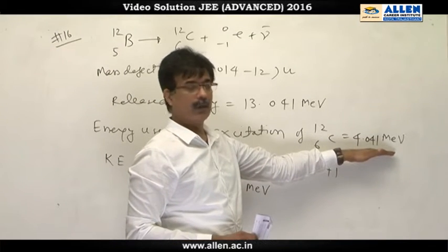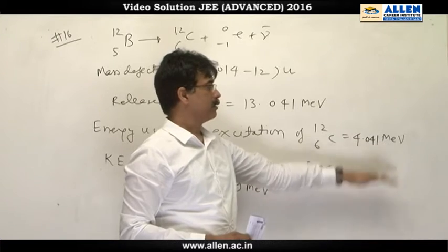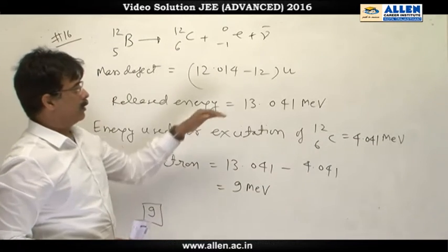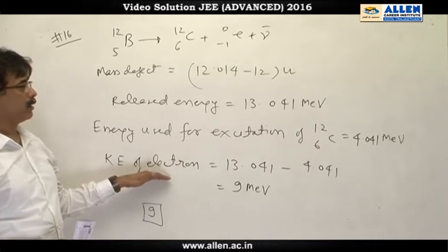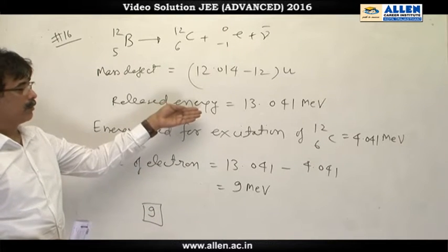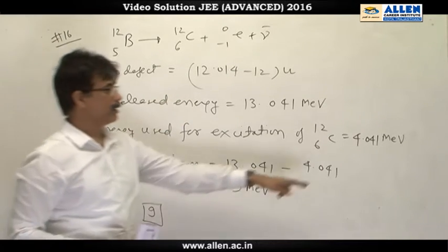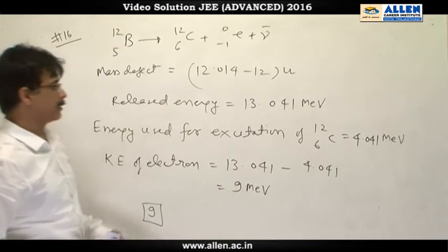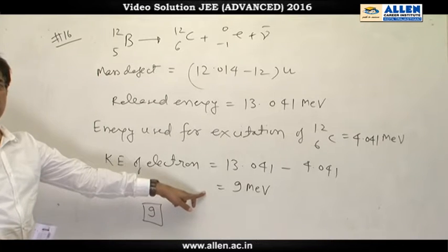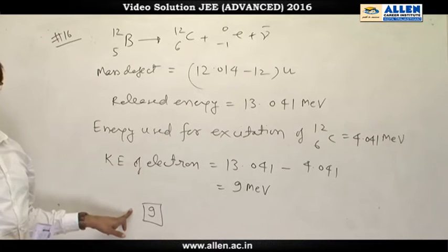Hence kinetic energy of electron will be the release energy minus the energy required for excitation. On taking difference, we get 9 MeV. So our answer is 9.